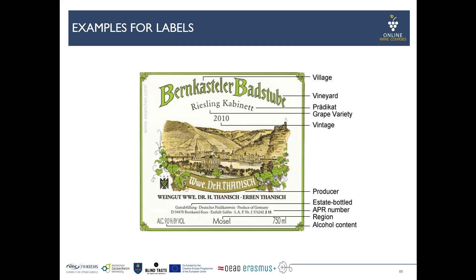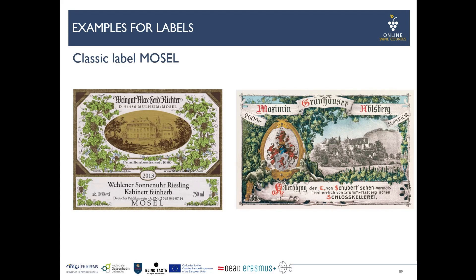We also have the AP number, and the region is mentioned as Mosel. It is worth noting that on older labels you find the term Mosel-Saar-Ruwer. There is still viticulture at the Saar and Ruwer, but more than ten years ago, to simplify and avoid misunderstandings, the region name was shortened to just Mosel. The alcohol by volume is also labeled, as is the bottle size — both required for German wines.